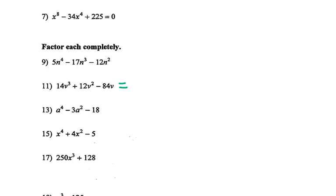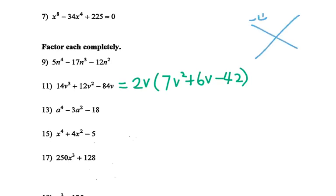For number 11, the common factor is 2v, so I get 7v squared plus 6v minus 42. I'll do the ninja X for that. I have negative 42 times 7. If the number is really big, do not multiply — just write it down. We try to find a pair of factors that add together to get positive 6. Here it's over 7 and over 7. For negative 42, I can write 6 times 7.